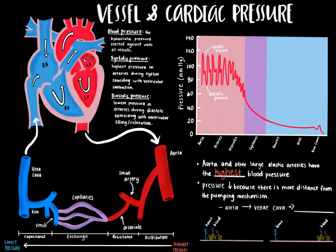Think of it as if you are on a bicycle and someone pushes you. The push is like the heart, and as you move further from the source of the push, you slow down. Once blood enters the venules and veins, blood pressure is so low that it barely makes it back to the heart's right atrium. There are a few mechanisms to increase blood flow through the venous system due to the valves found in veins. In summary, pressure decreases going from large arteries to large veins, which is supported by the graph as we can see a downward trend.